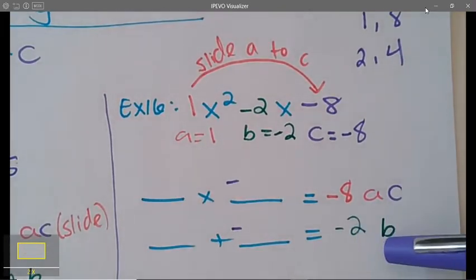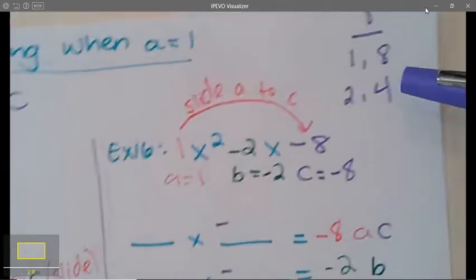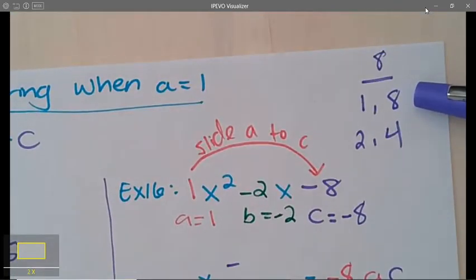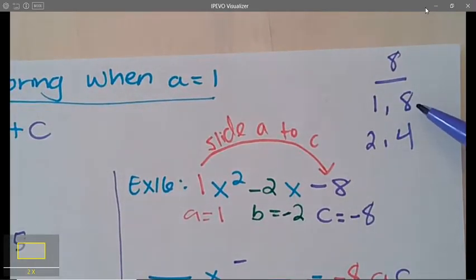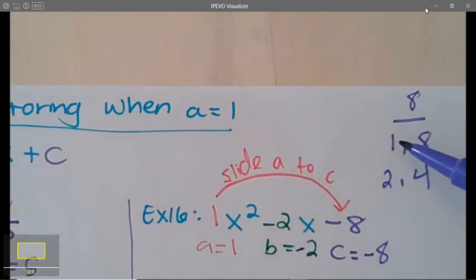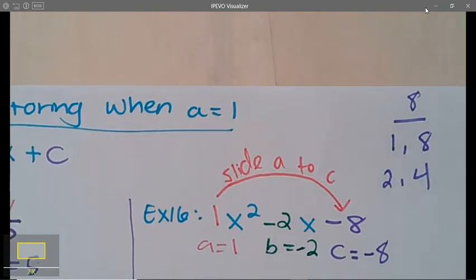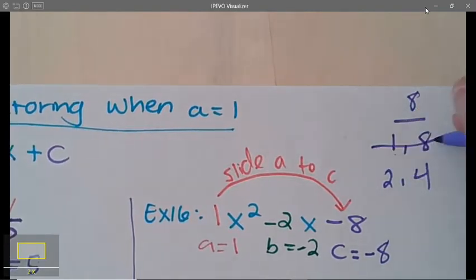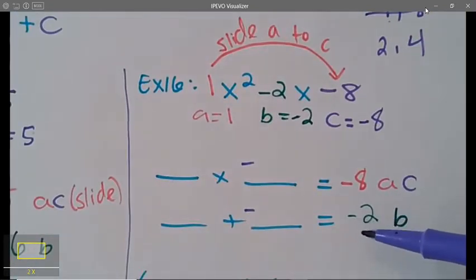Let's see here, if I use 1 and 8, negative 1 plus 8, well that's 7, so that's not going to work because I'm trying to get negative 2. And negative 8 plus positive 1, well that's negative 7, so this one does not work.